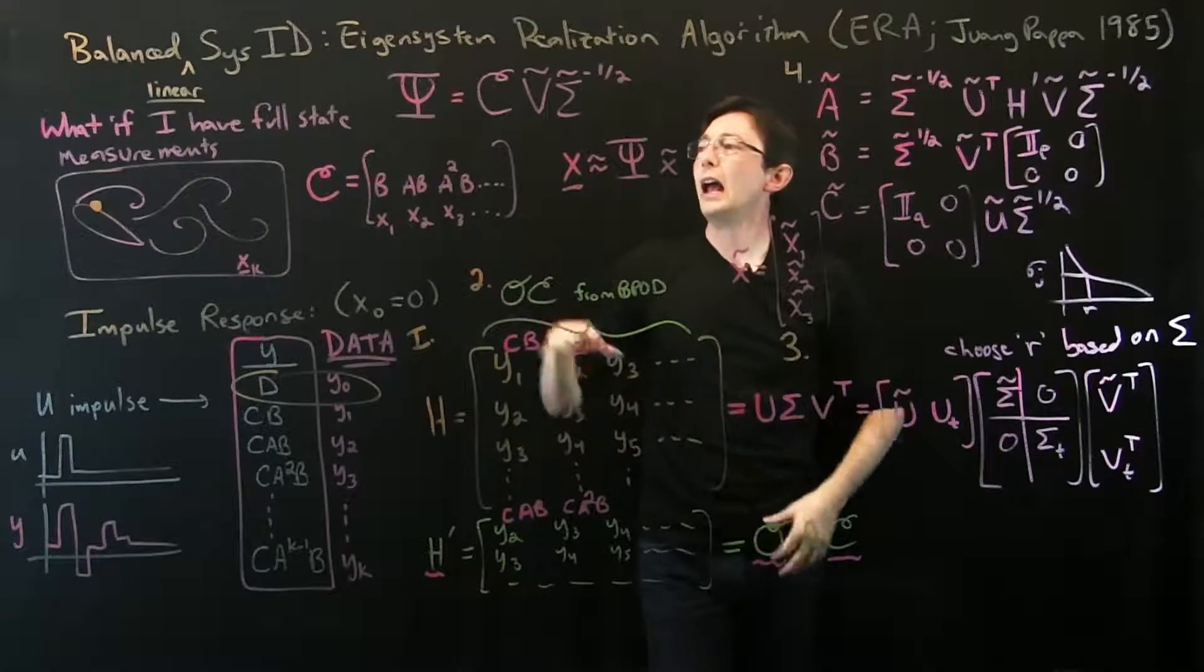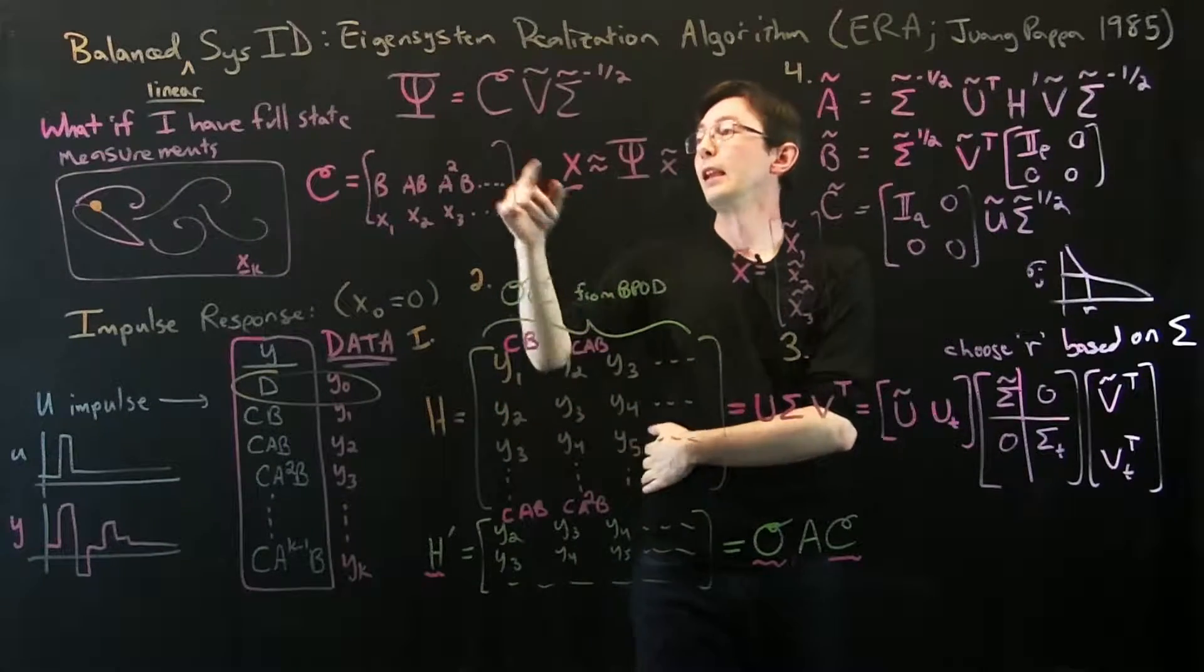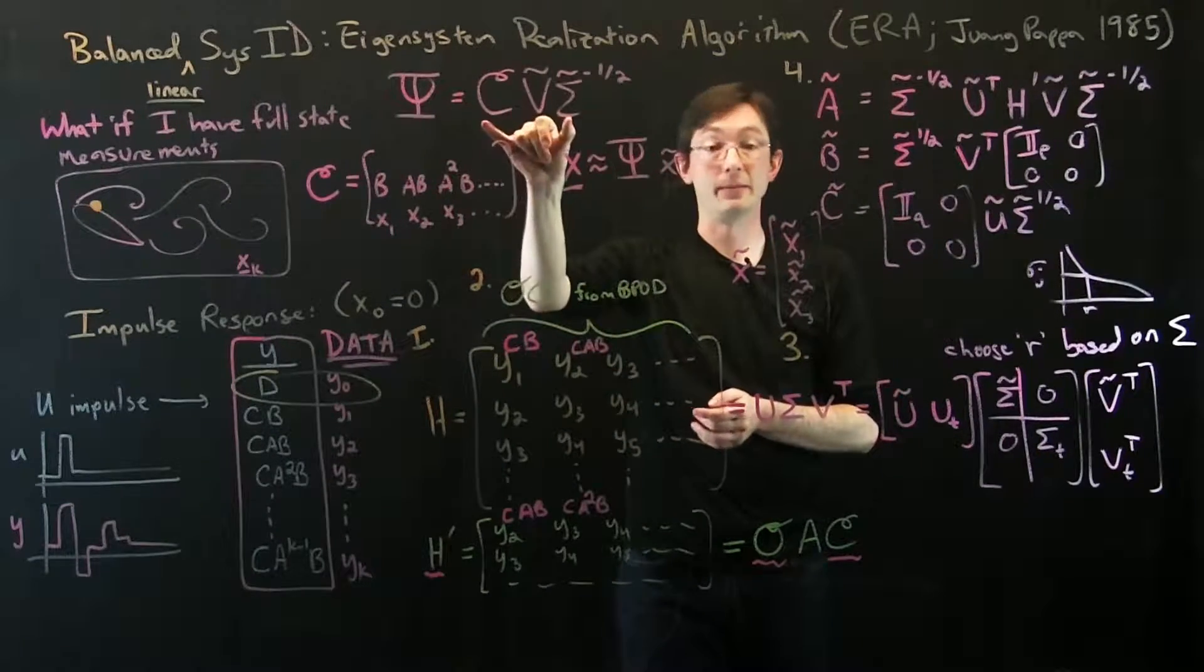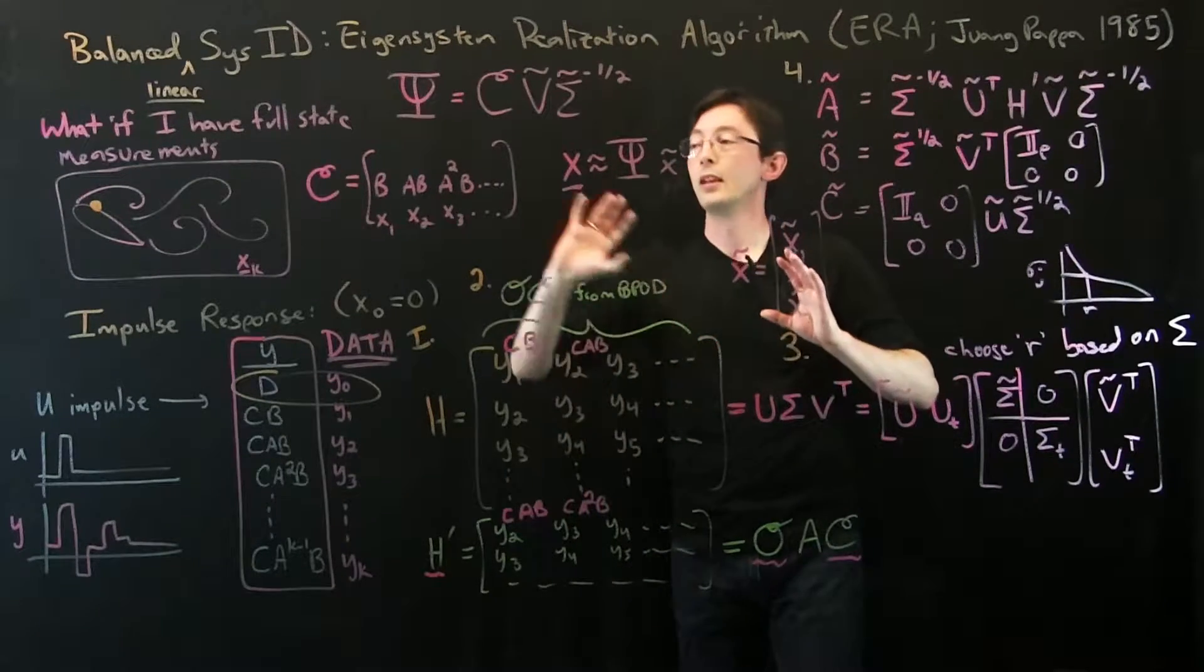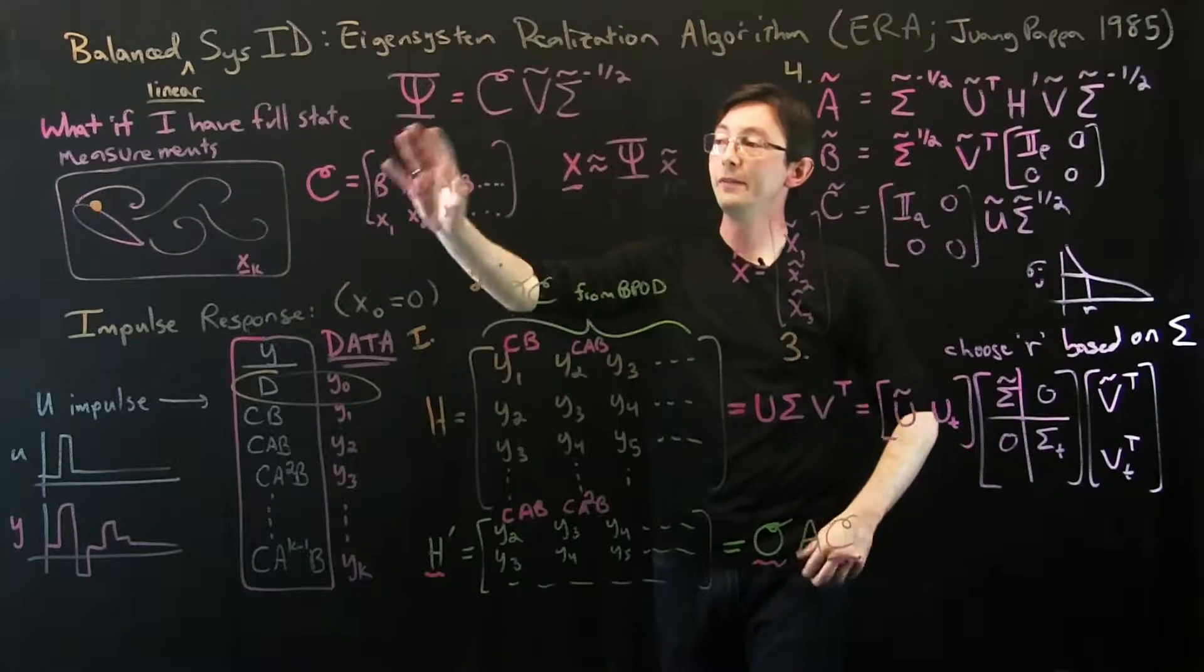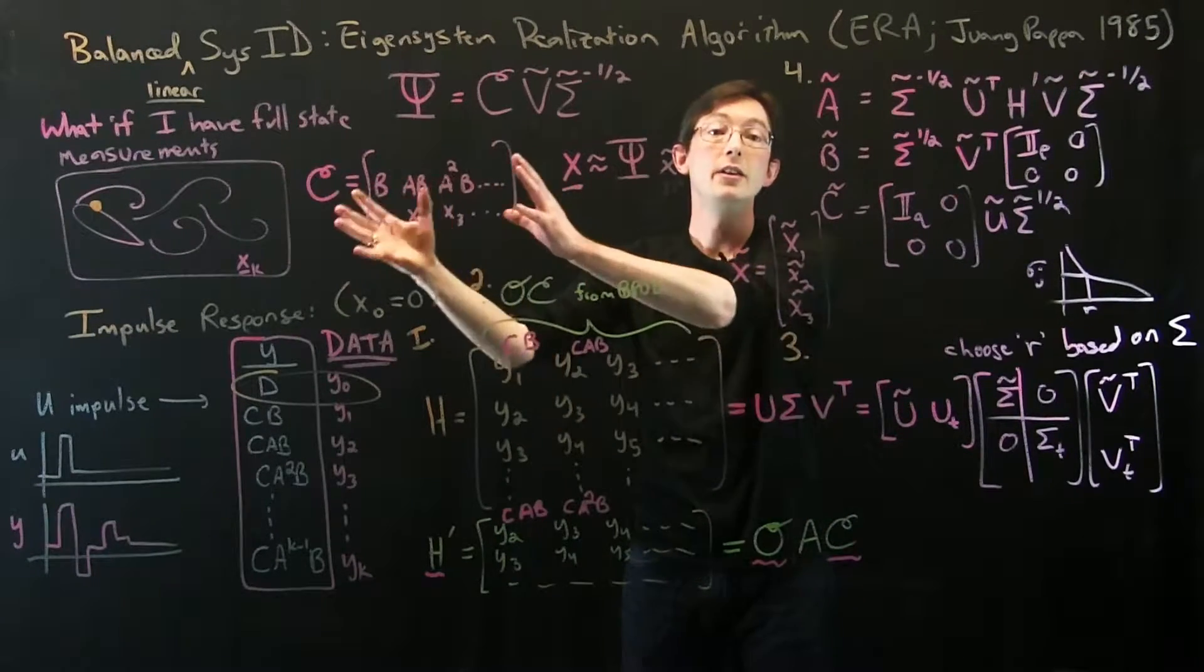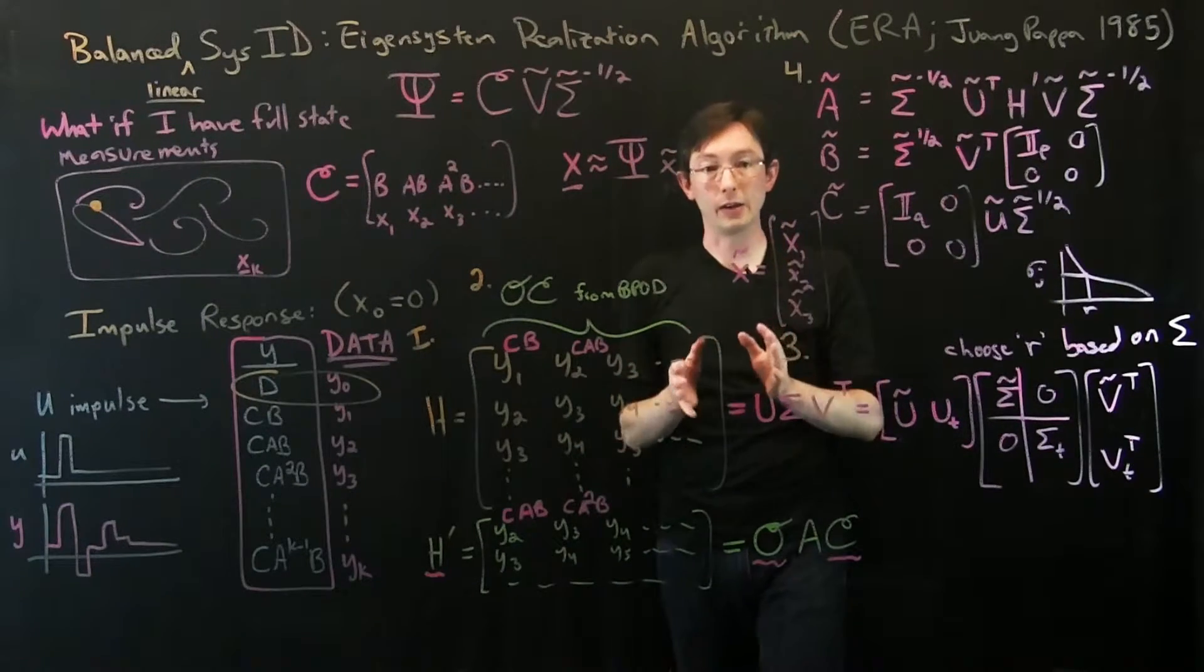And so this is really how BPOD is connected to ERA: in the case that you have full state measurements, then these models really do become equivalent. This really is exactly the psi matrix that you would get from BPOD and so on and so forth. So very useful—you can build reduced order models just from inputs to outputs, but if you happen to be lucky or careful and you can build full state measurements in the laboratory, you can then get much more interpretable ERA models.